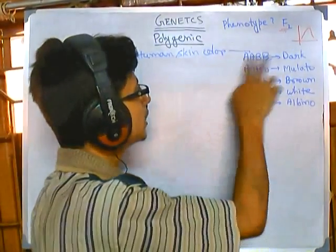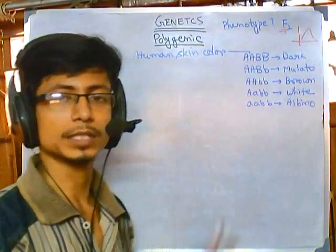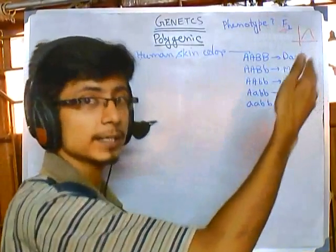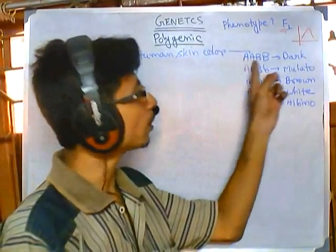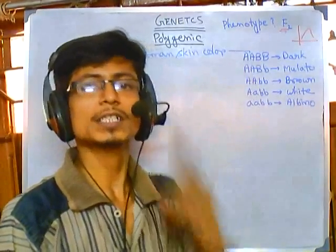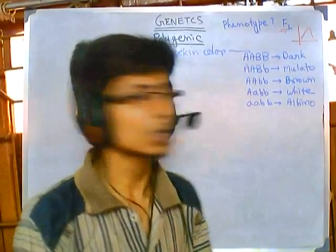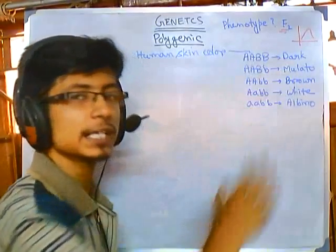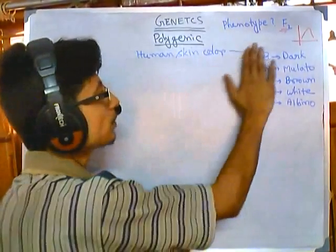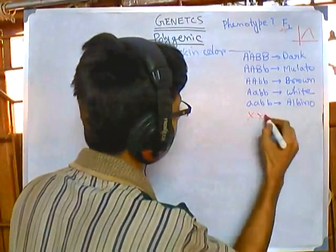The most important concept you need to understand is the designation of A and B. In other types of genetics problems, A is for a separate trait and B is for a separate trait. But in polygenic problems, whether it is A, B, or X, Y, or A, B, C, D, E, F, G, H — whatever is given — all of the genes are for the same single trait. This is the most important concept, because if you think of them as two different traits, you will probably end up with a horrible mistake.